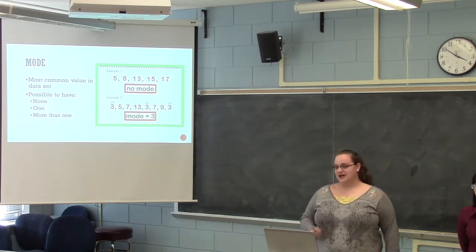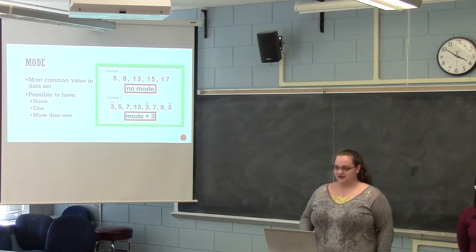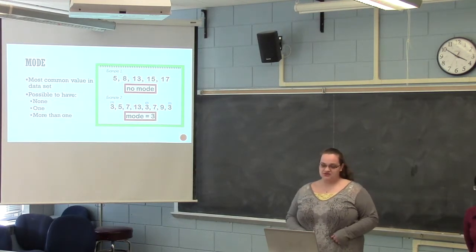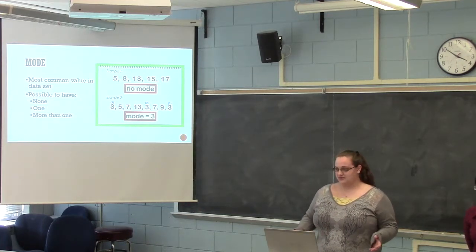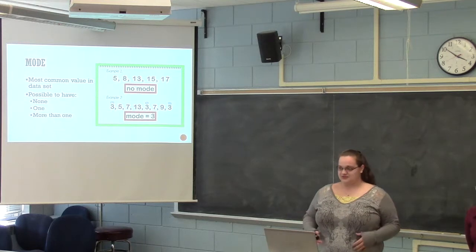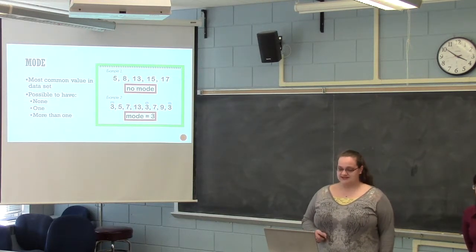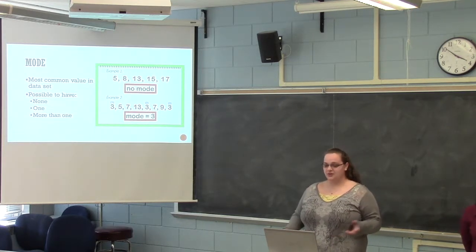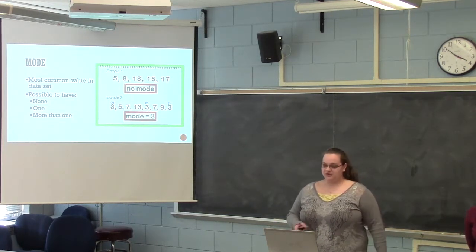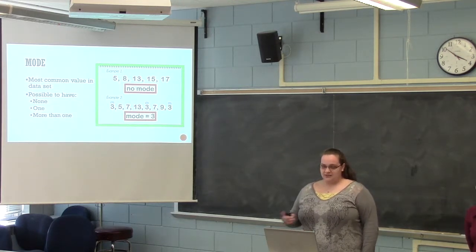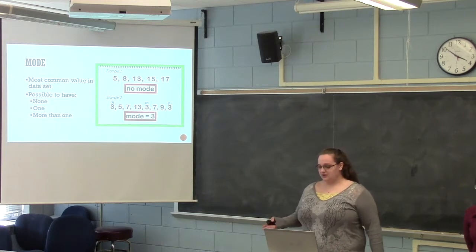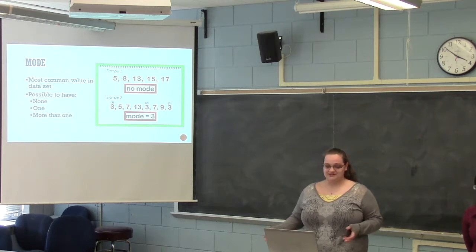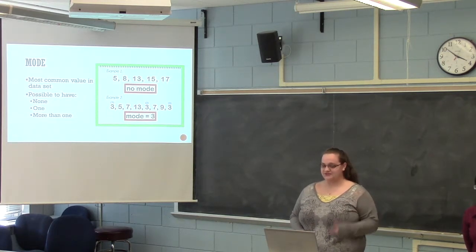Then we have the mode, which is your most common value in your data set. You can have one mode, no mode, or more than one mode. In the first example, there is no mode, as all numbers are represented only once. In the second example, the number 3 is the mode since it appears three times, more than any other number. Seven appears twice but is less frequent than 3, so it's not a mode. However, if 7 were also represented three times, it would also be a mode — giving you two modes: 3 and 7.